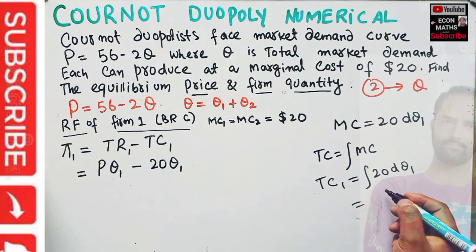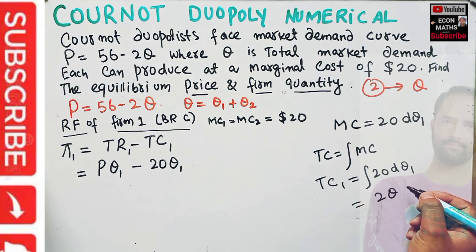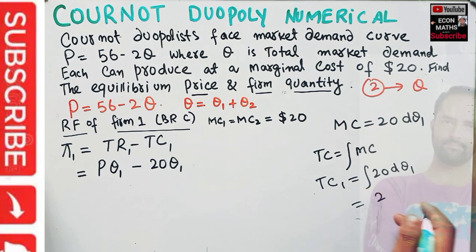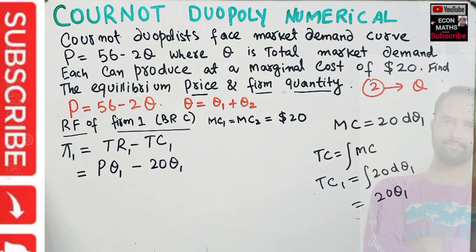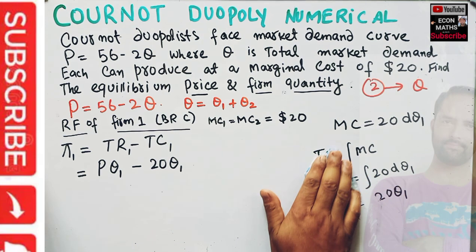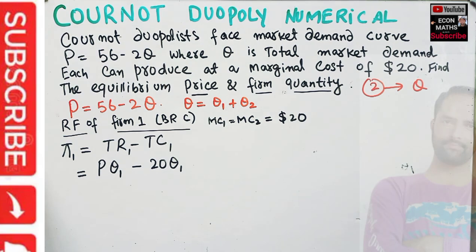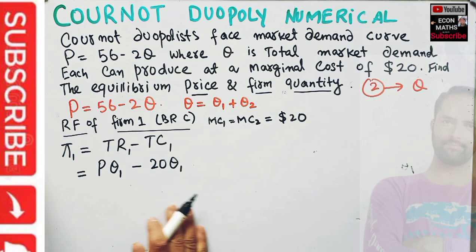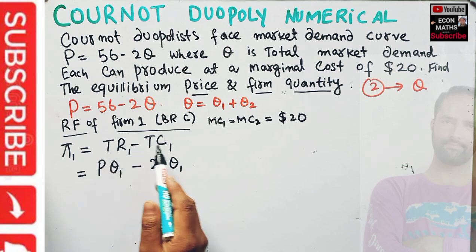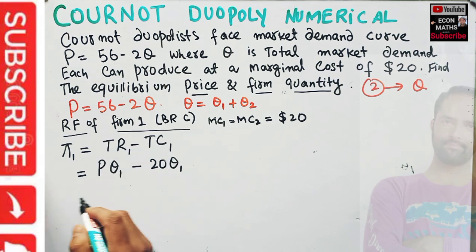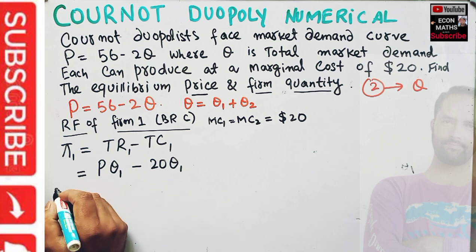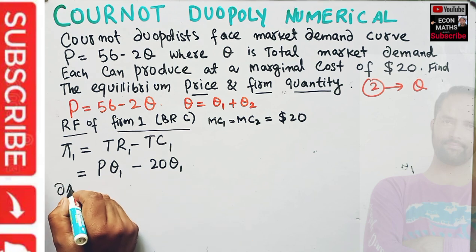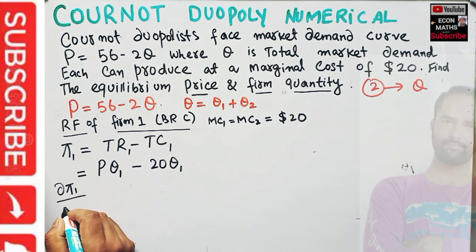So total cost for firm one is 20·Q1. Another way to see this: when you add up the marginal cost you get the total cost. Now profit maximization requires that the derivative of the profit function with respect to output Q1 should be equal to zero.